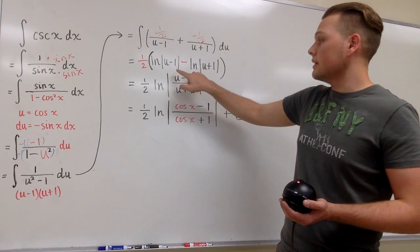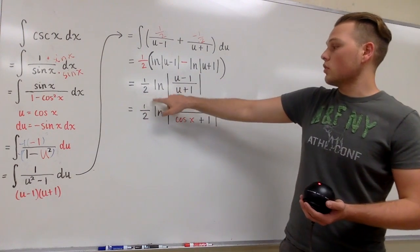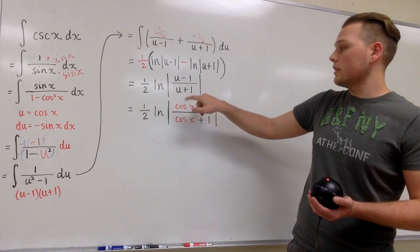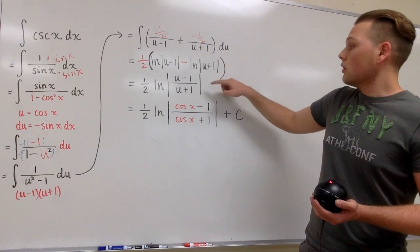Now we're going to combine the natural logs here and we're going to simplify this as 1 half times natural log of the absolute value of u minus 1 over u plus 1.